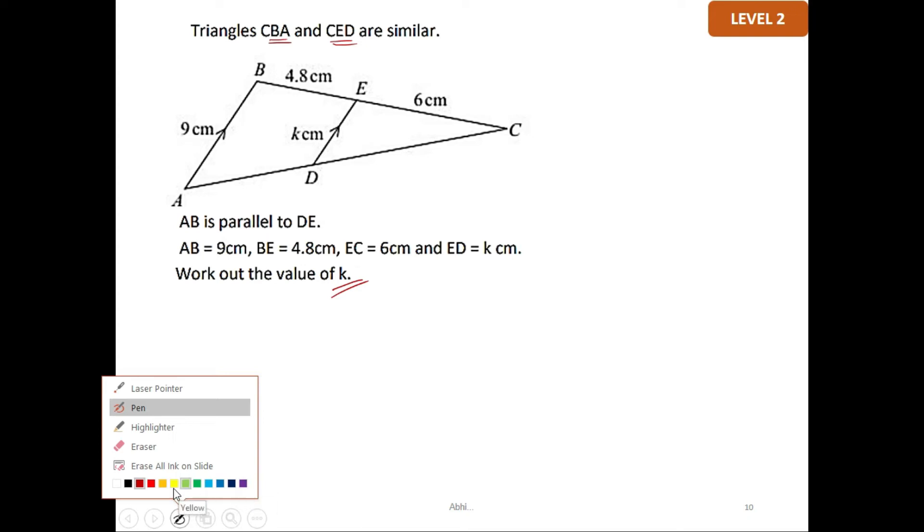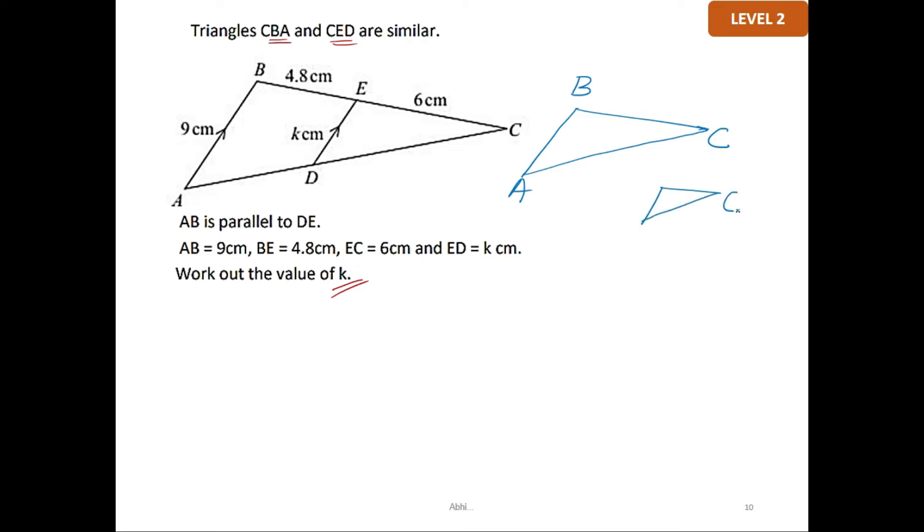You have two similar triangles here which look overlapping. The bigger one is CBA and the smaller one is CED. Here you have 9 cm for AB. ED is k cm. BC, look at the long line BC, which is 4.8 plus 6 cm, giving you 10.8 cm. The smaller one, EC, is 6 cm.